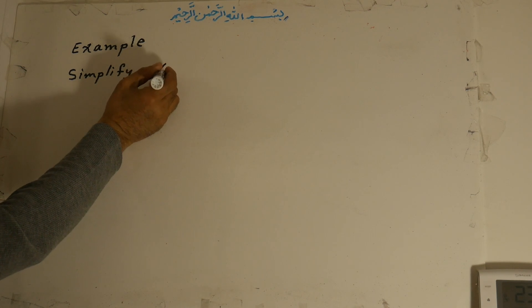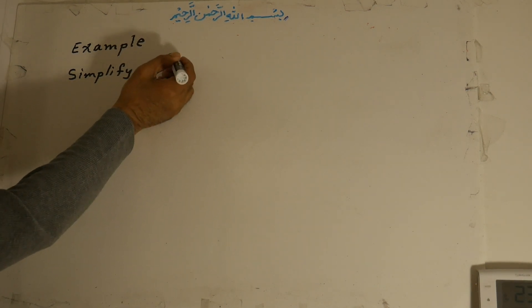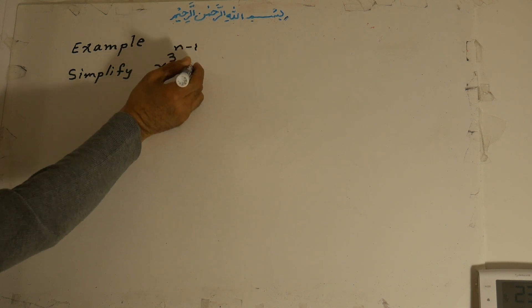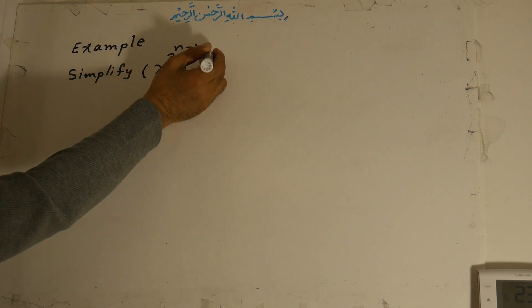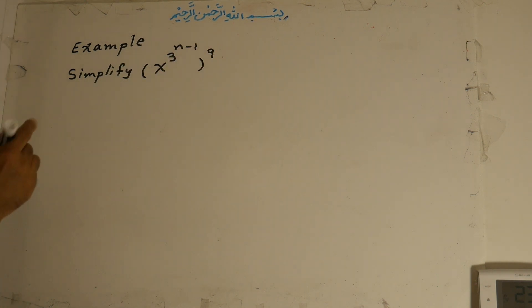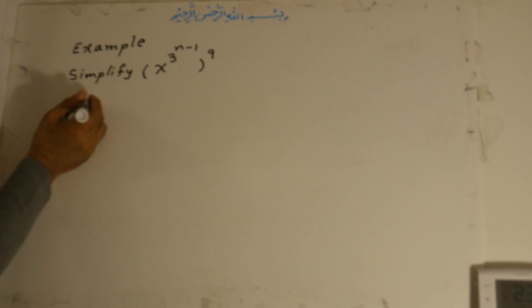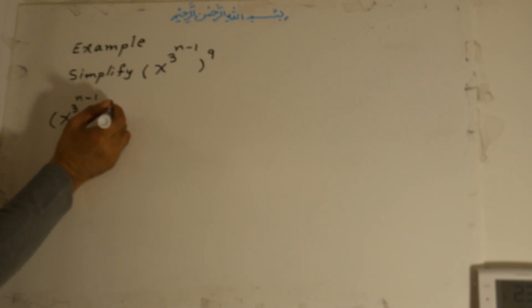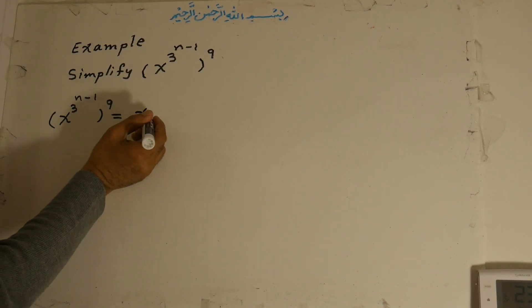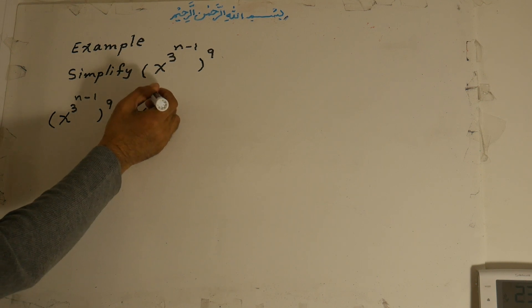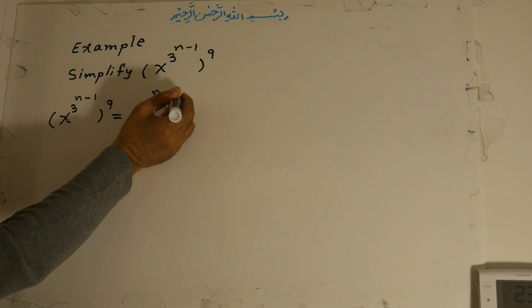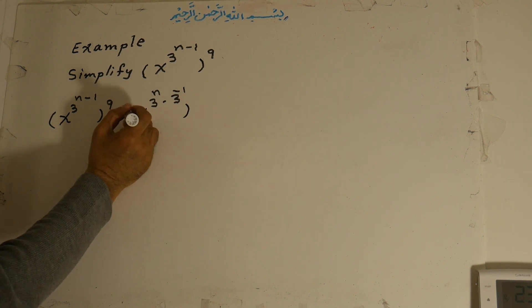Now I'll show you another example. Simplify x to the power of 3, all to the exponent of n minus 1, to the exponent of 9. We simplify: x to the power of 3, all to exponent n, all to the power of 9. We can write this as x to the power of 3 to the power of n, times 3 to the power of minus 1, all to the power of 9.